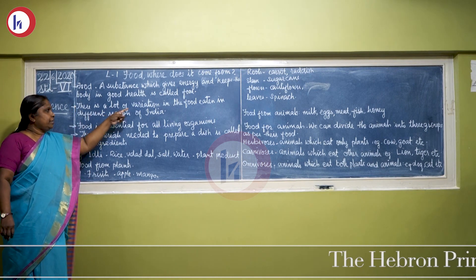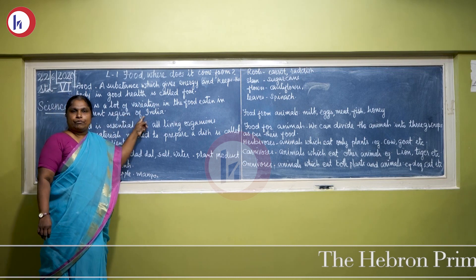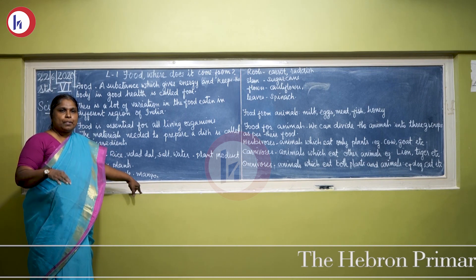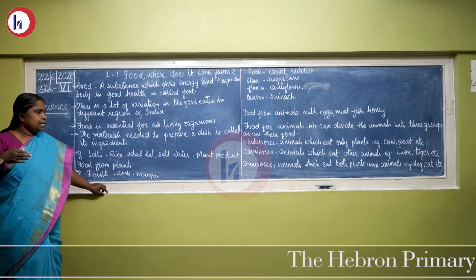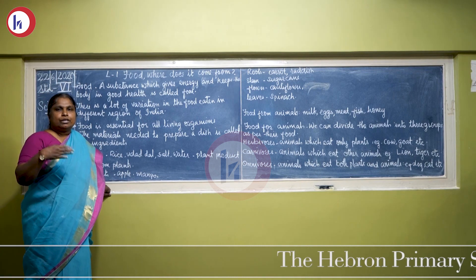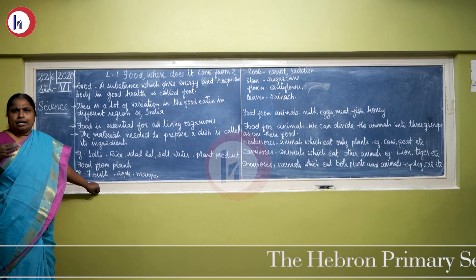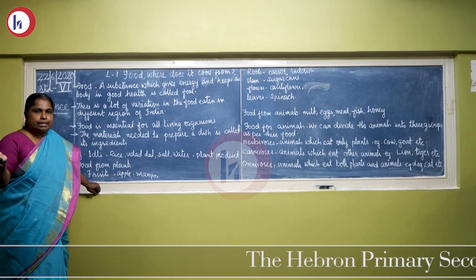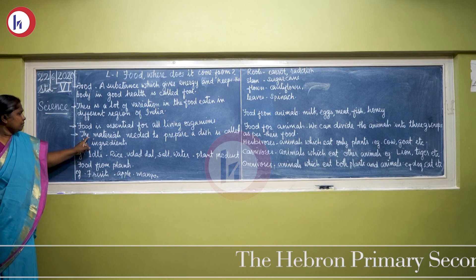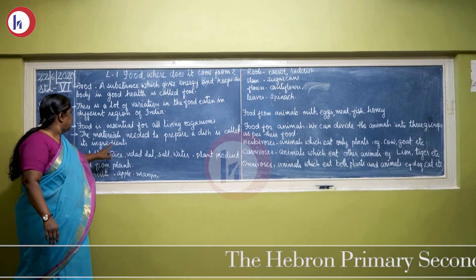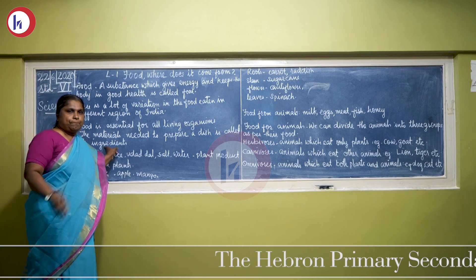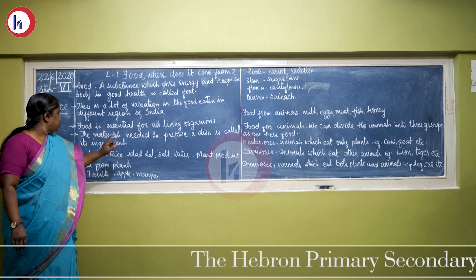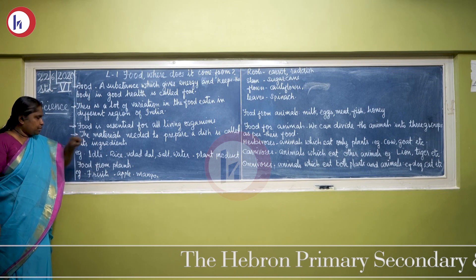There is a lot of variation in the food eaten in different regions of India. In our daily life, whatever food we are eating — breakfast, lunch and dinner — that food is also different from each other. We are not eating the same food again and again. The material needed to prepare a dish is called its ingredients. The materials which we use to prepare the food are called its ingredients.